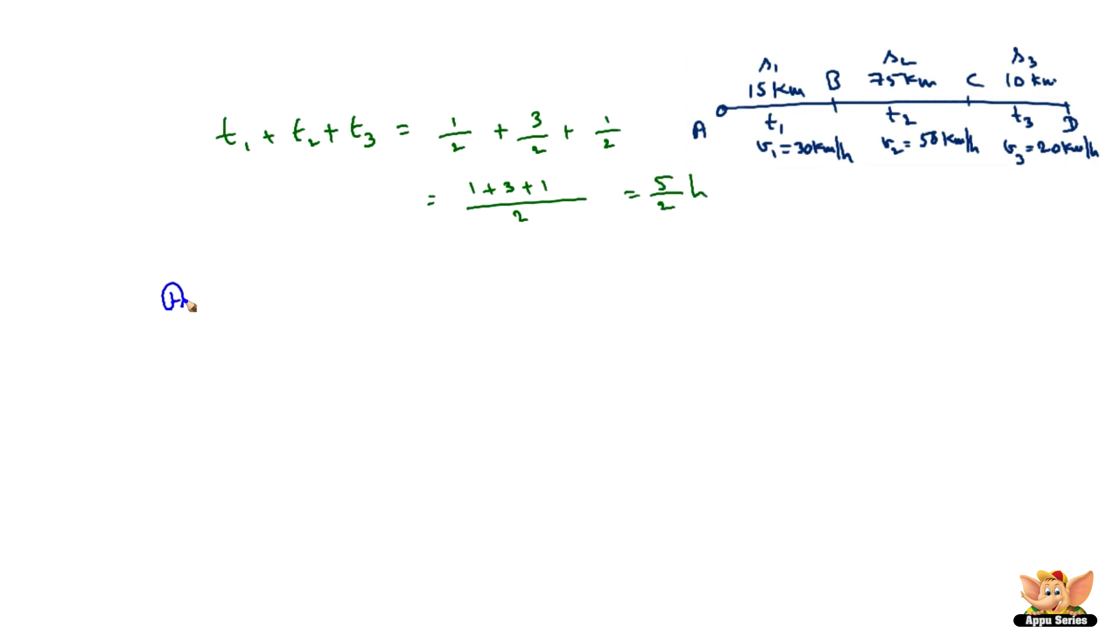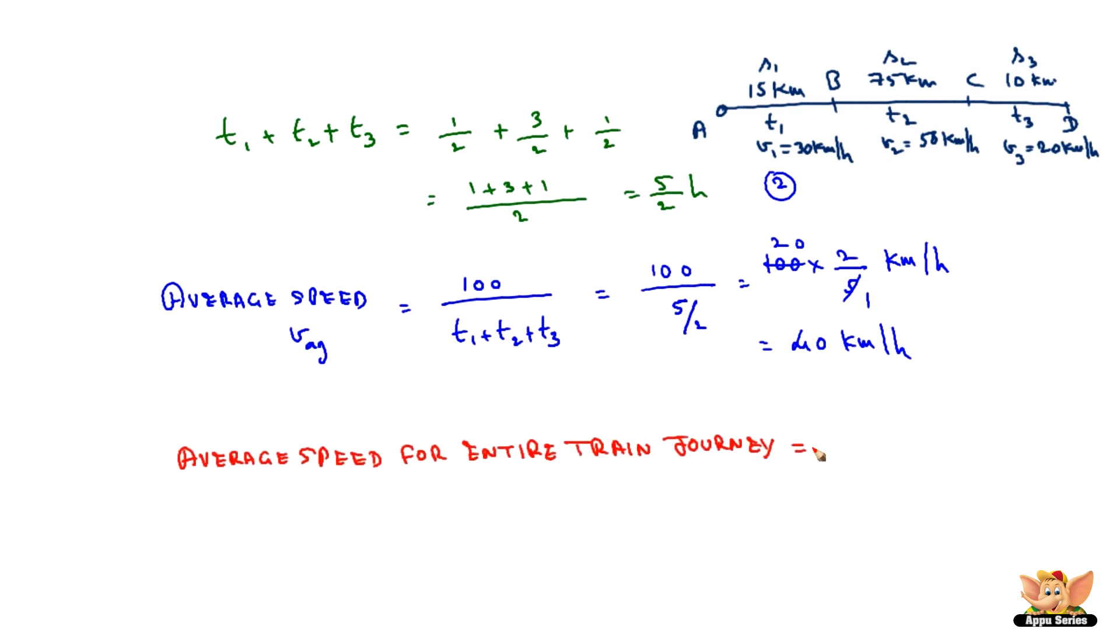Now we can compute the average speed of the train for the entire trip by applying equation 2 in equation 1. 100 by T1 plus T2 plus T3, which is 100 by 5 by 2, becomes 100 into 2 by 5 km per hour, which on cancellation we get 40 km per hour. Hence, the average speed for the entire train journey is equal to 40 km per hour.